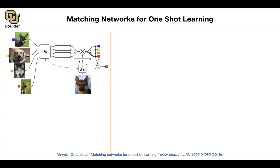With few-shot learning, new users using your website have some new images with new classes — classes you haven't seen during training, like new breeds of dogs. Say you encounter four new classes at test time or production, and each one has one, two, three, or four images. This is why it's called few-shot learning. If you have one image per new class, that's one-shot learning. Two images means two-shot learning, because you're given two examples for that class.